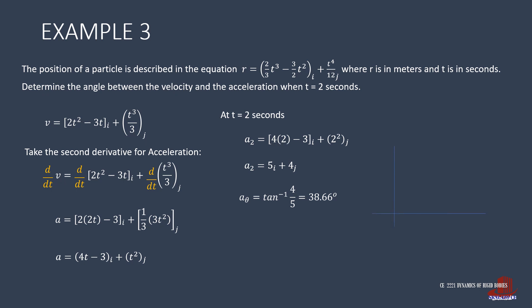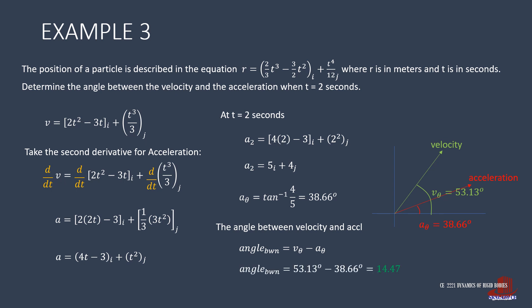With the two inclinations already identified, the angle between velocity and acceleration is taken as the difference of the velocity angle and the acceleration angle — that is 53.13 minus 38.66, yielding 14.47 degrees.